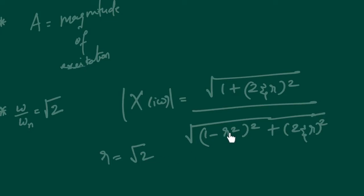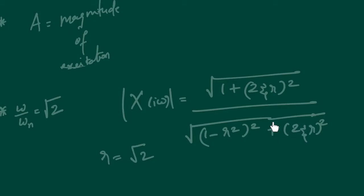If I put r = √2, then (1 − r²) = (1 − 2) = −1, and squaring gives 1. So the denominator and numerator cancel each other, yielding a value of 1 for |x(iω)|. That means regardless of the amount of damping present in the system, the transmissibility always equals 1 at this point.